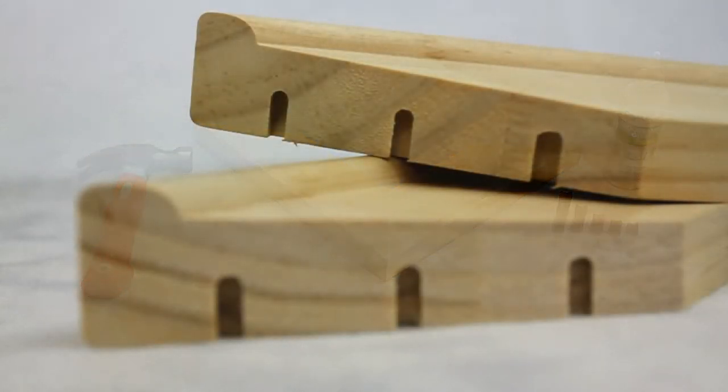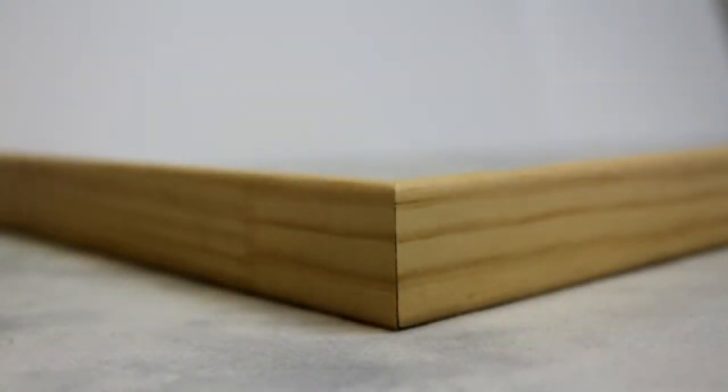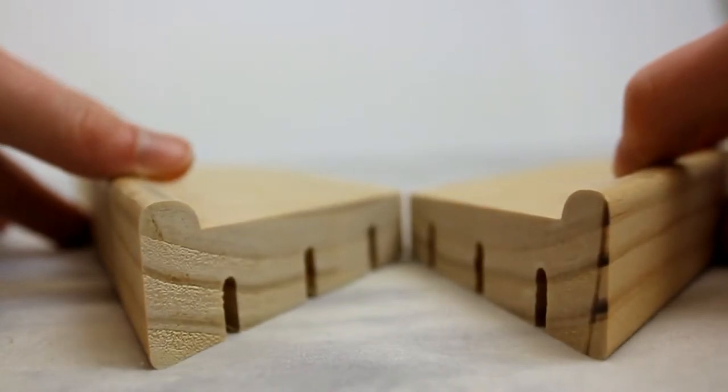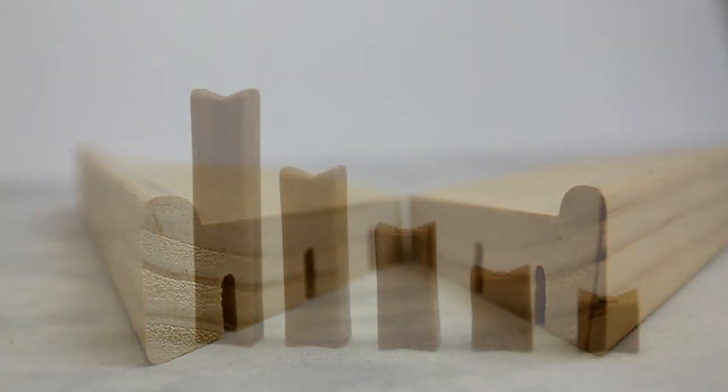This is done by using the Hoffman routing machine, which creates a unique keyway in the edge of a molding, then placing the key inside the keyhole. The keys resemble a bowtie shape.